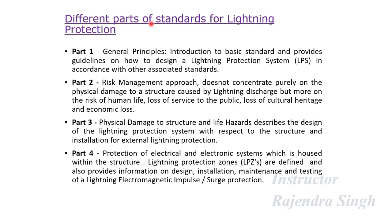The different parts of standards for Lightning Protection are as follows. Part 1 - General Principles: introduces the basic standard and provides guidelines on how to design a Lightning Protection System in accordance with other associated standards. Part 2 - Risk Management Approach: does not concentrate purely on physical damage to structures caused by lightning discharge, but more on the risk to human life, loss of service to the public, loss of cultural heritage, and economic loss.